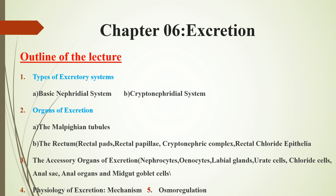The outline of this lecture covers: types of excretion systems — the basic nephridial system and the cryptonephridial system; organs of excretion, including the major organ in insects, the Malpighian tubules, the rectum, and some accessory organs; and finally, the physiology of excretion as related to osmoregulation.